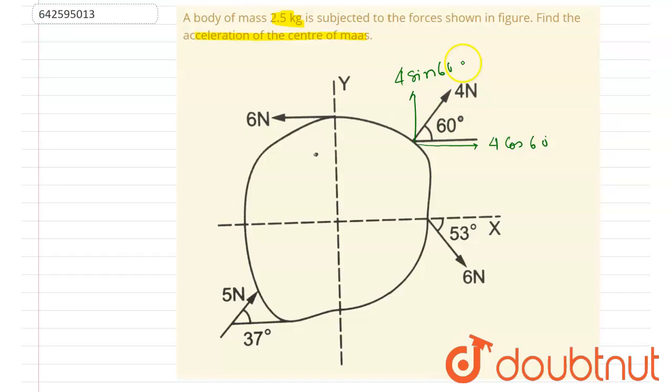And this will be 6 cos 53 degrees and this will be 6 sin 53 degrees. And here it will be 5 sin 37 degrees. So you can just calculate the value.